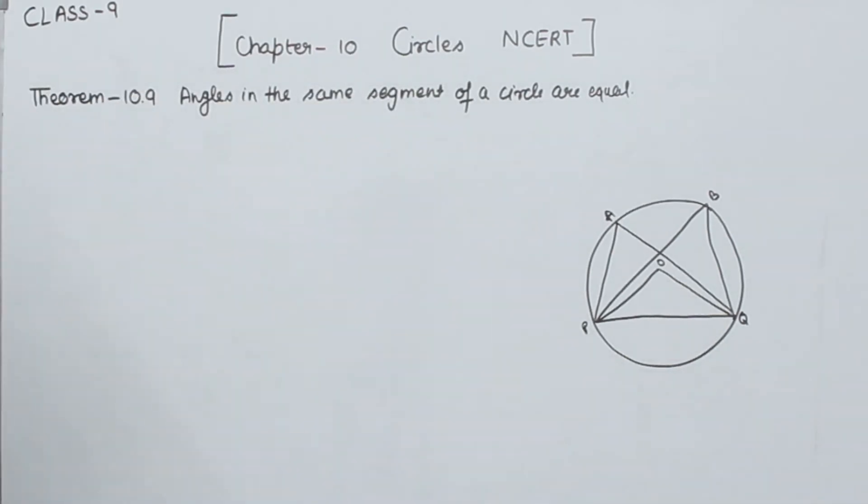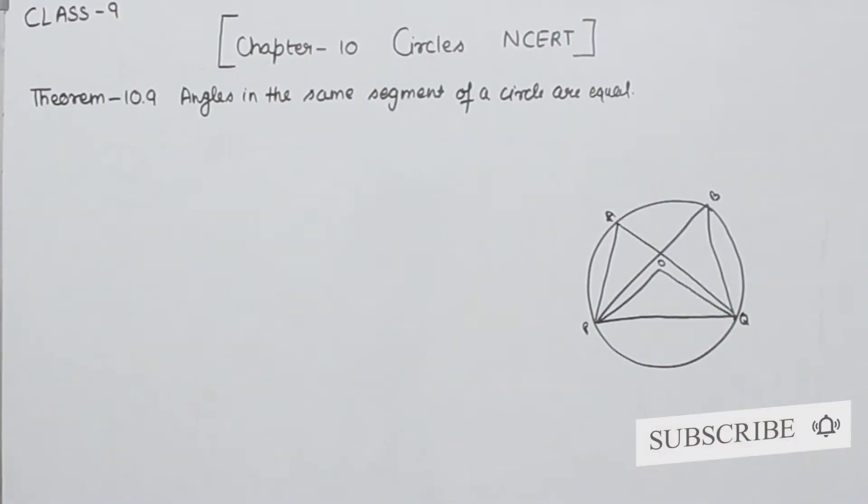Theorem 10.9. In theorem 10.9, angles in the same segment of a circle are equal. Angles in the same segment of a circle are equal.